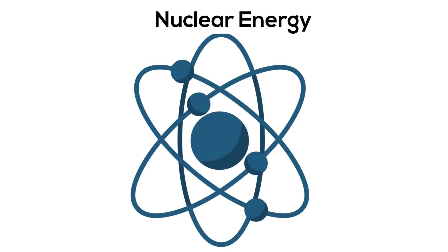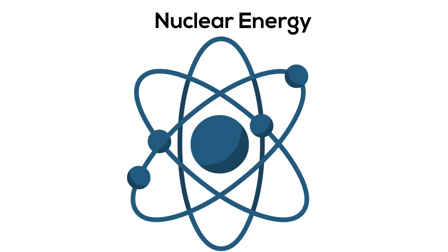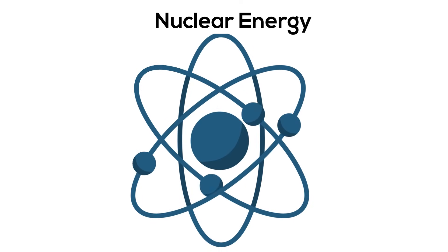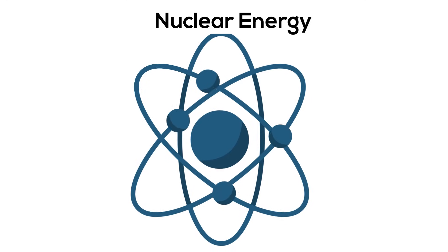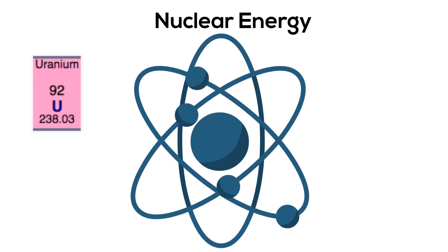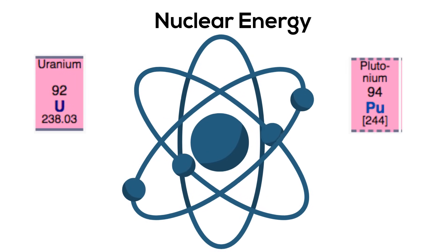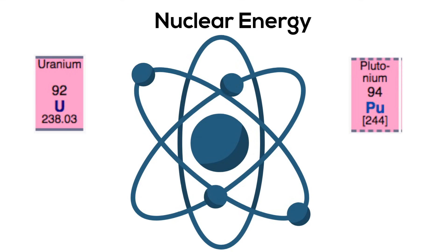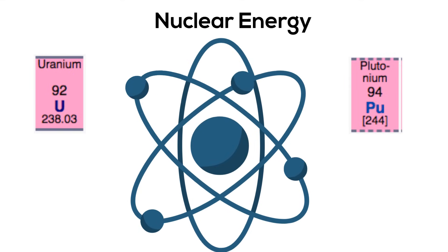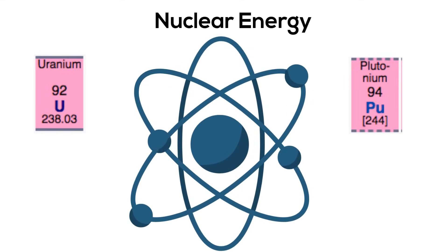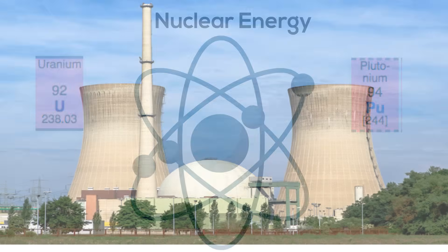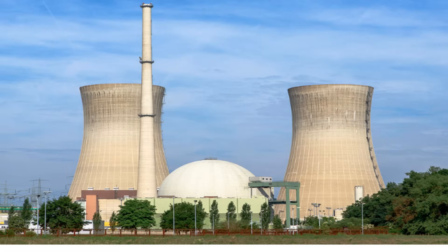Nuclear energy is energy stored in the nucleus of an atom. When large atoms such as uranium or plutonium are split into two smaller atoms in a process called fission, energy is released. Nuclear power plants use this process to help create energy.